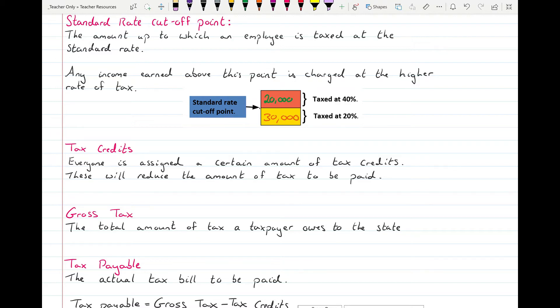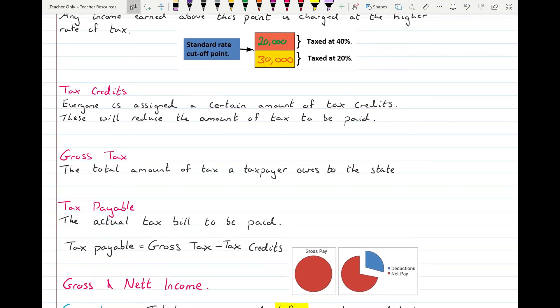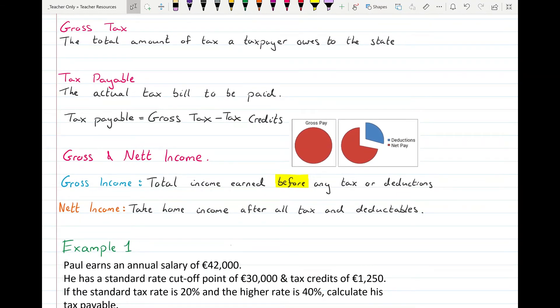Gross tax is the total amount of tax a taxpayer owed to the state. That's the total amount of tax before any credits are applied or any deductions or anything like that. And then your tax payable is the actual tax bill at the end that you need to pay the government. So your tax payable is your gross tax take away your tax credits, and whatever's left over is the amount that you have to pay. If you look at this pie chart here, your gross pay is the whole lot, and then if you take out your deductions, you're left with your net pay. So gross income is the total income earned before any tax, and then your net income is how much money you get to take home with you. So gross is before, net is after. Net is what you come home with.